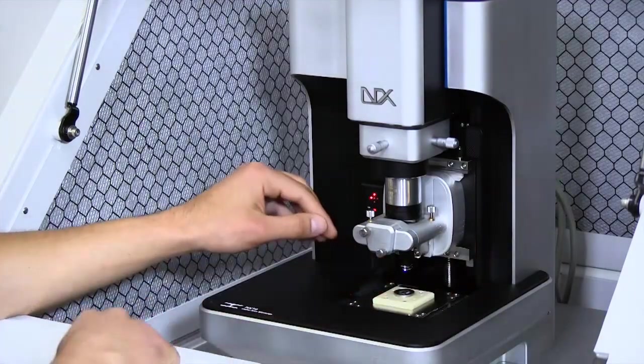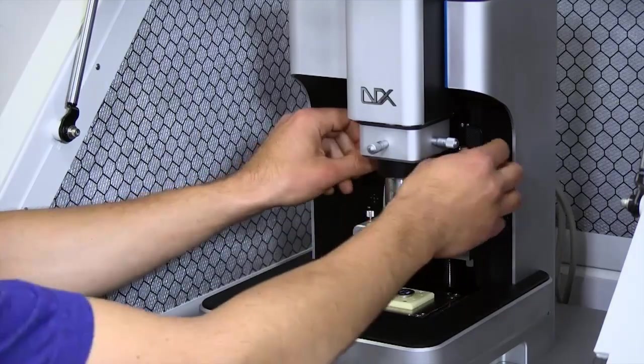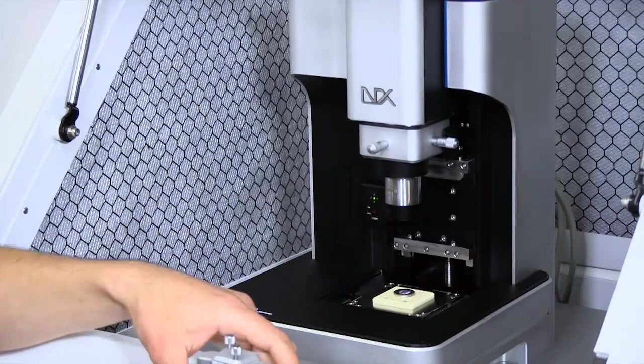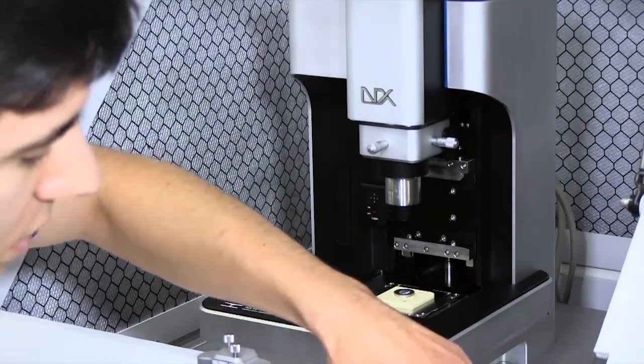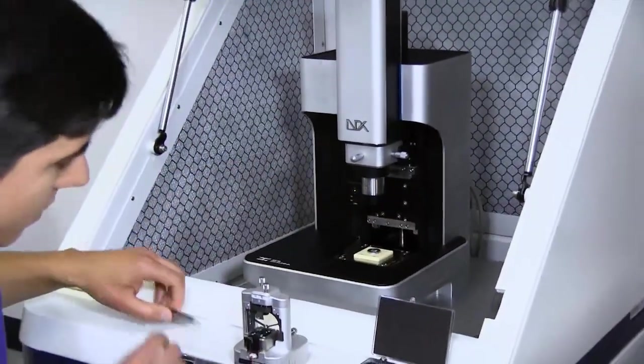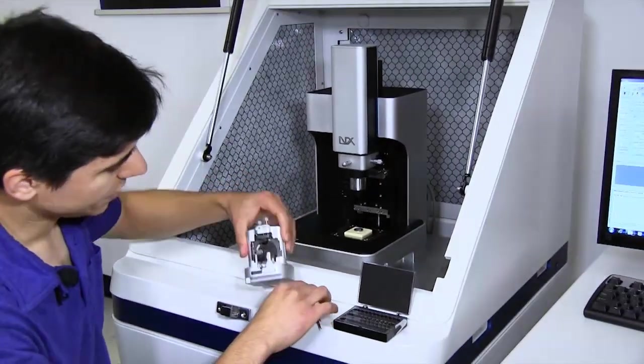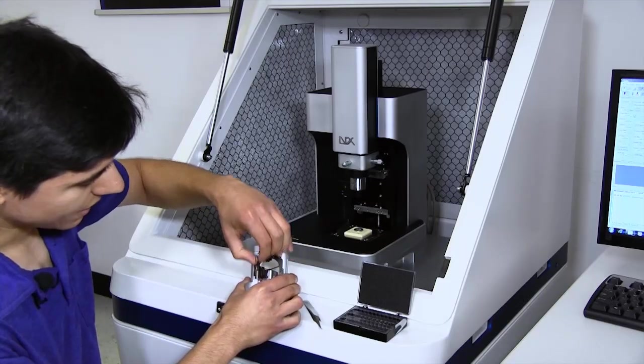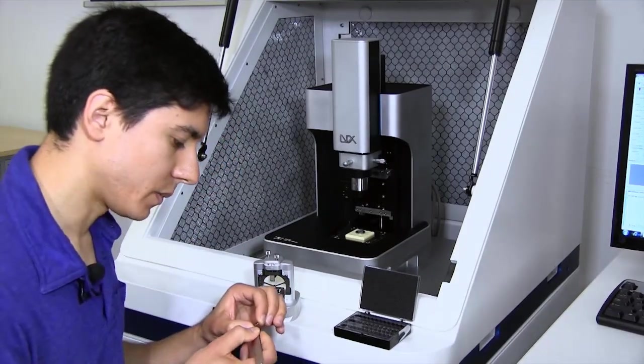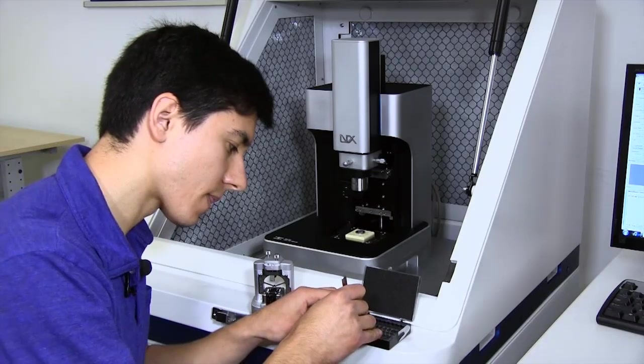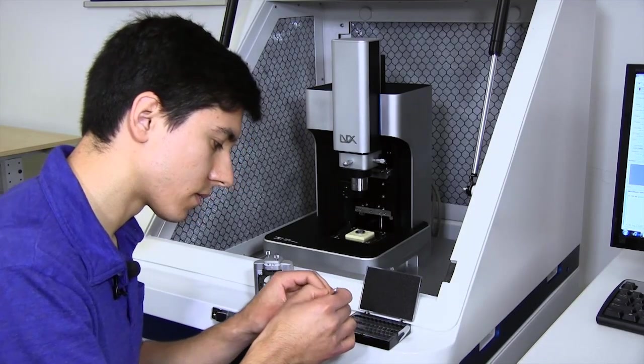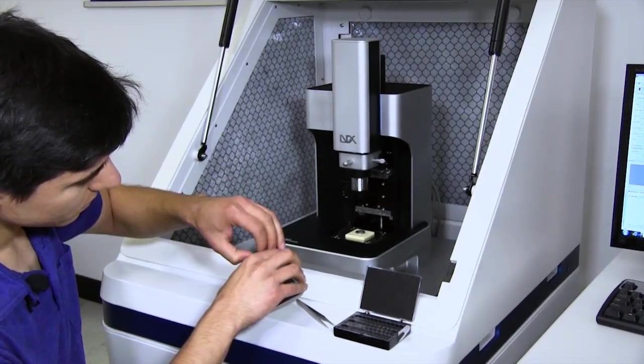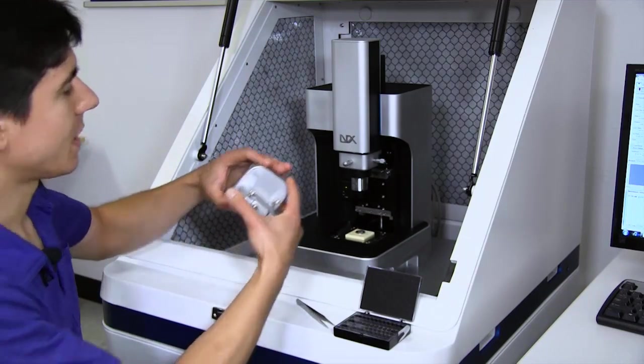Now let me change out the probe we're using for this scan. To do that, we remove the AFM head. The probes are attached to steel carriers so they magnetically snap in and out of the head. I'll remove the old one, snap in the new one, and replace the head back on the microscope.